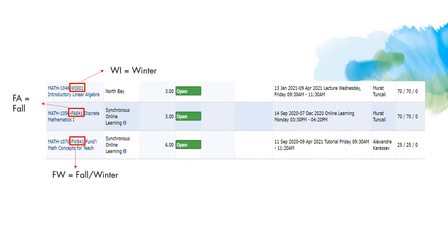There will be another video assisting you with WebAdvisor, but let's take a quick look so you know how to tell if a course is available in the fall or the winter. Here's a quick screenshot of the math offerings in WebAdvisor, just to give you an example of how to tell which semester a course is being offered in. Course codes are followed by two letters indicating which term the course is offered: FA, meaning the course runs from September to December; WI, meaning the course runs from January to April; and FW, meaning the course runs from September to April, or all school year.